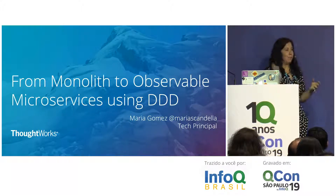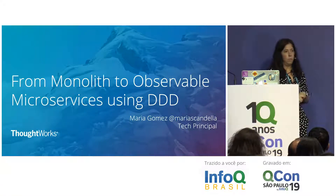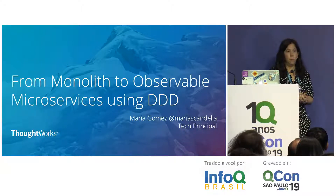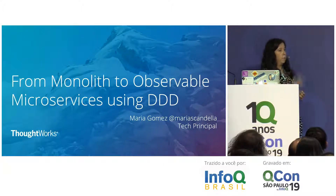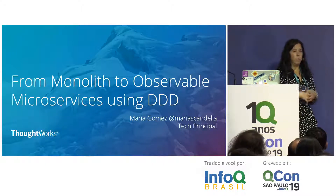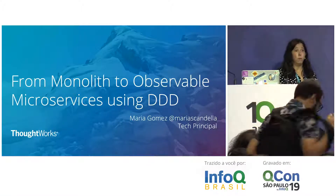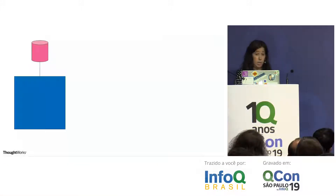We're going to be splitting this talk in two parts. We are going to talk about using domain-driven design to help us understand our system better and make better decisions when we want to break it down into microservices. And then we're also going to link it to some of the operational concerns and observability concerns that you need to bake in when you are breaking down your monolith.